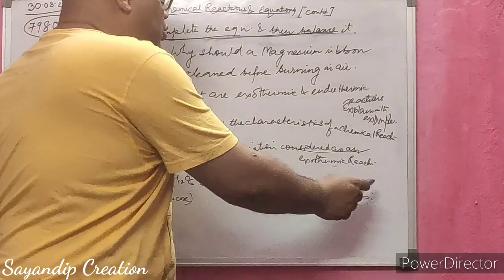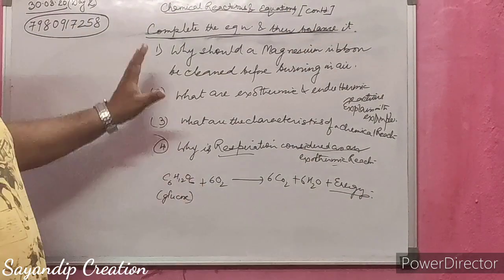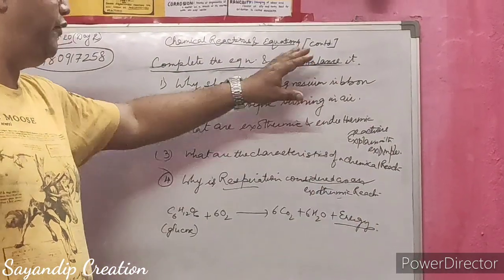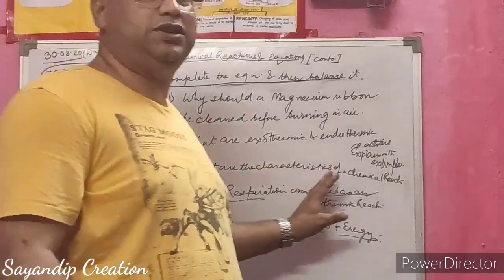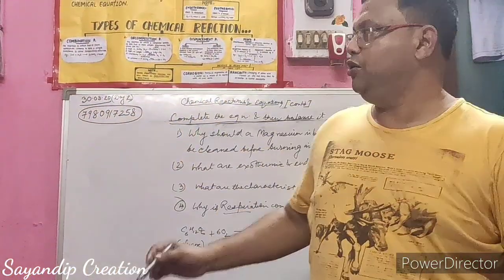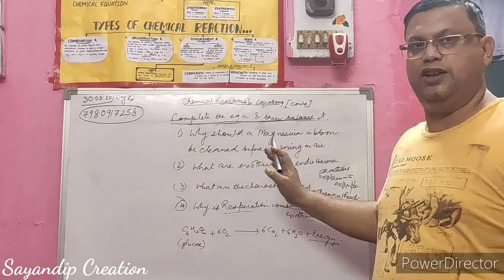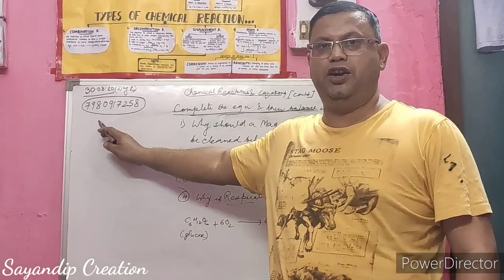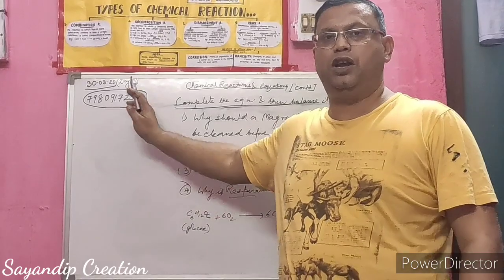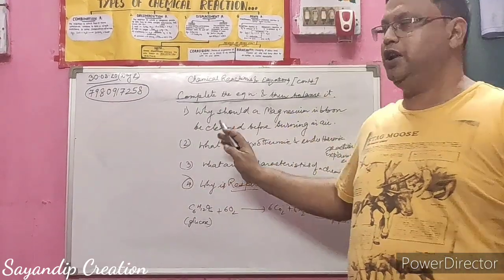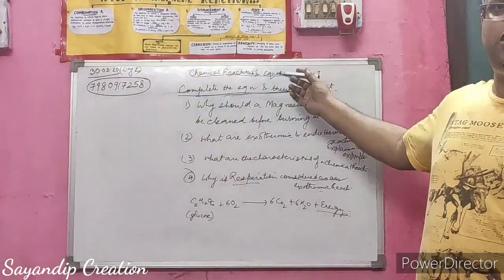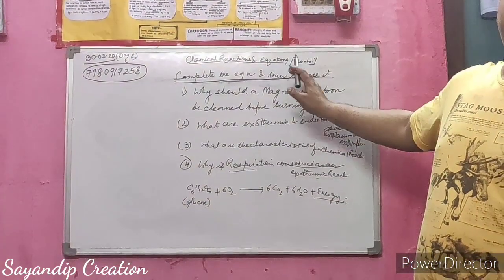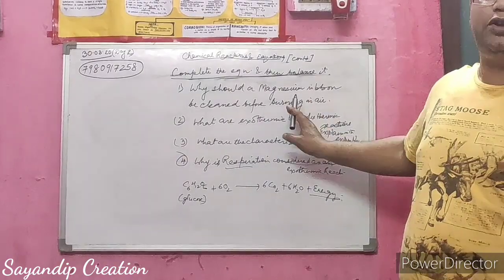If you see the NCERT book you will find lots of balancing equations. If you have any doubts in balancing or translating, you can send me a message on WhatsApp — I have given my WhatsApp number. In my next class, coming in one or two days, I will cover the various types of chemical reactions. Thank you.